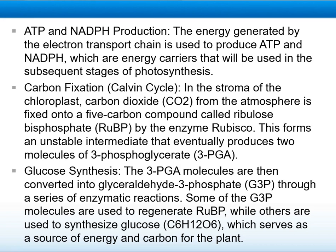ATP and NADPH production. The energy generated by the electron transport chain is used to produce ATP and NADPH, which are energy carriers that will be used in the subsequent stages of photosynthesis.